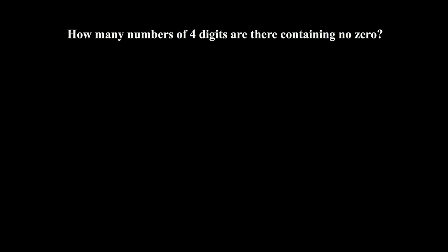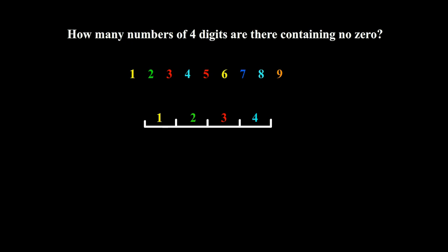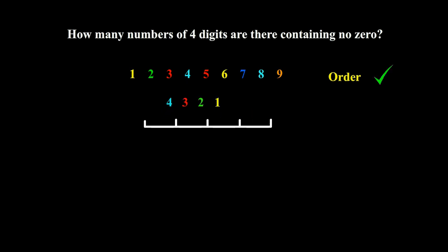Example one: How many four-digit numbers are there containing no zero? The digits except zero are one through nine. There are four places of digits. The order of digits matters — for example, 1234 is different from 4321 — so order is important. Also, it is possible to have a number like 1122, so repetition is allowed. Therefore, this is an arrangement problem.